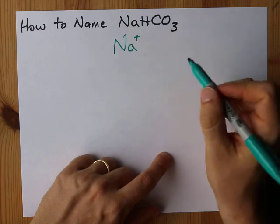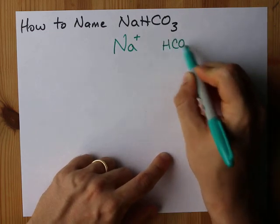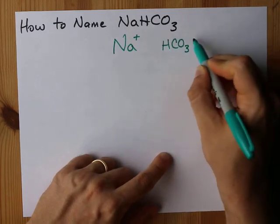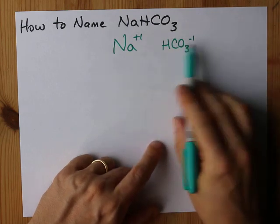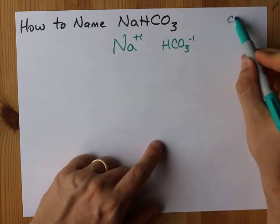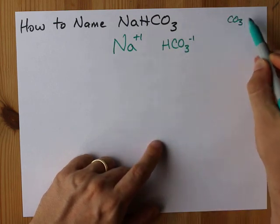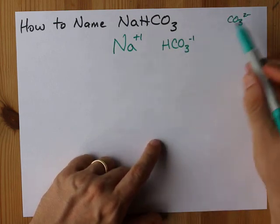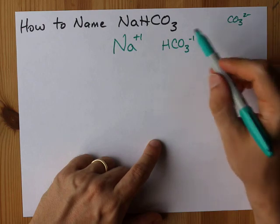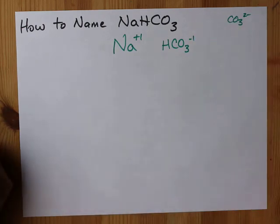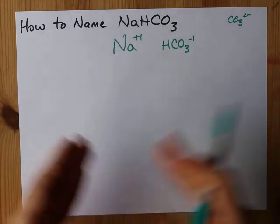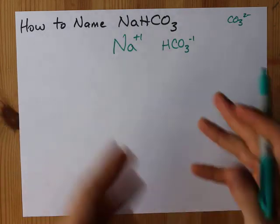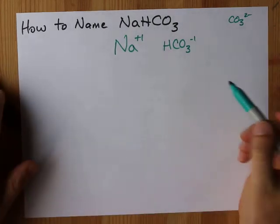The anion here is HCO₃ with a minus 1 charge. Now you might recognize CO₃ with a 2 minus charge — this is the same thing with an H added on. If you can name both of these ions, you just put those two names together, and you've got the name of the compound.